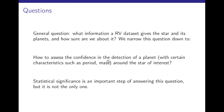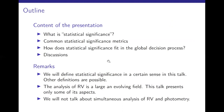I'm going to talk about the definition of statistical significance and common significance metrics used in the exoplanet literature, and how statistical significance is included in the global decision process on whether you think you have a planet or not. I'll also note that the analysis of RV is a large and evolving field, and I'm not going to talk about everything in that field — in particular, I will not talk about simultaneous analysis of RV and photometry.